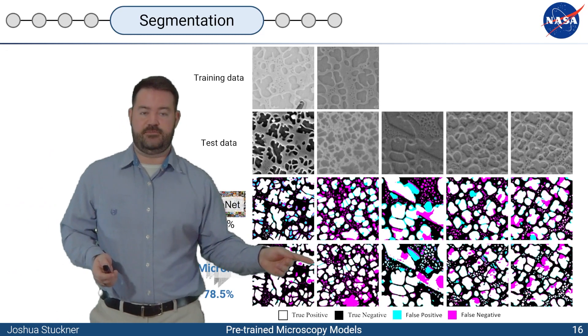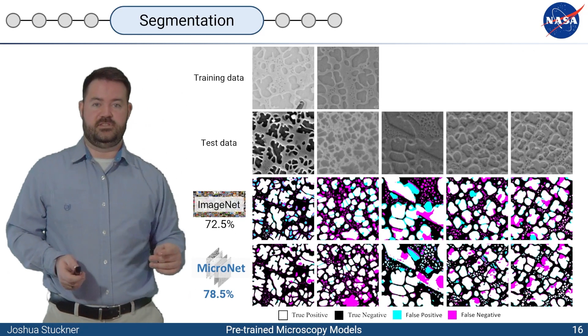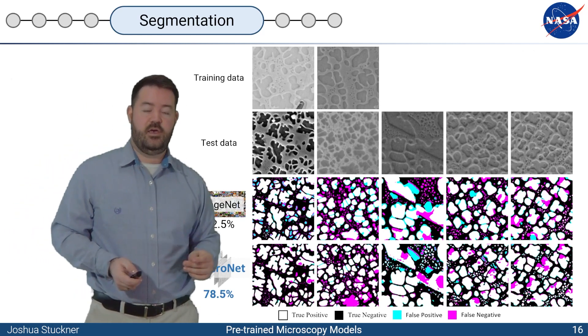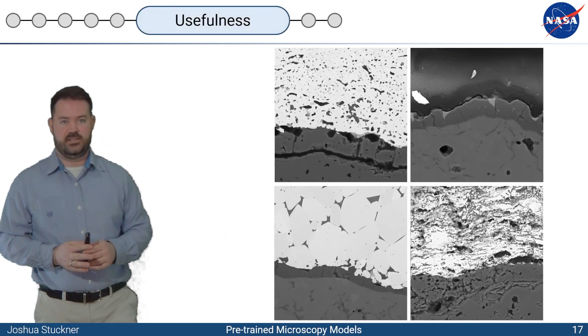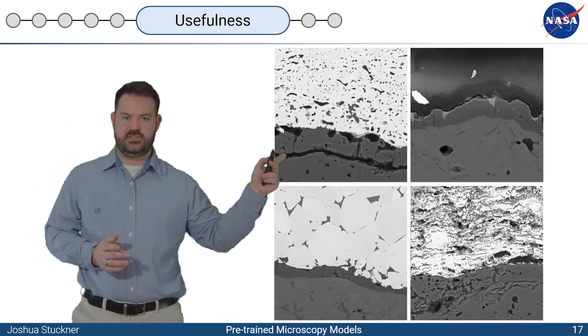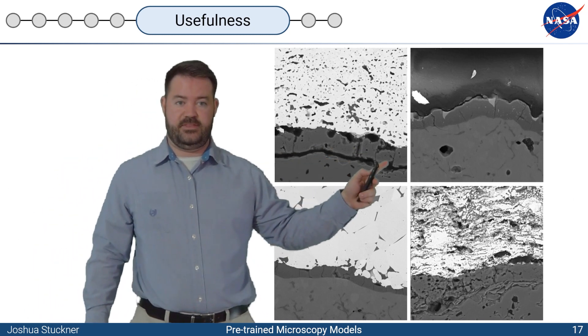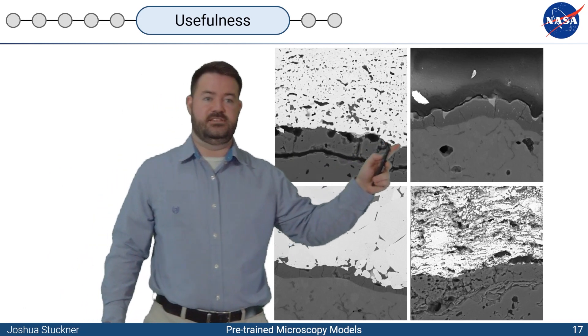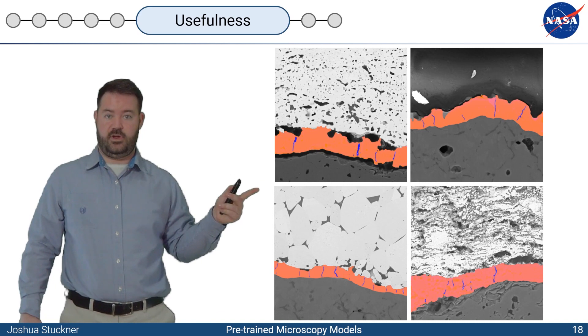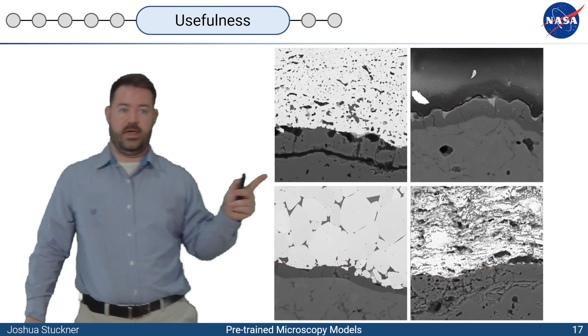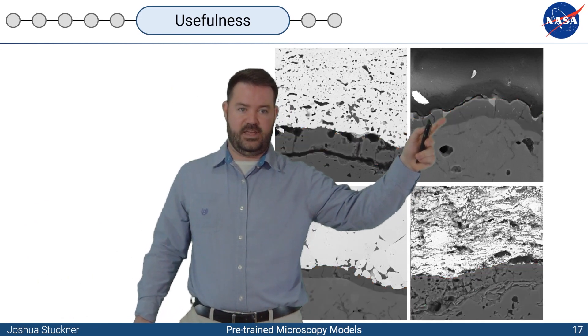In the worst case, you maybe have to sketch out another piece of training data. But often, I notice that it just works without me having to retrain the model with new training data. So for example, these are several different environmental barrier coatings. And they look quite different. So what we want to do is segment this oxide layer, but we're also going to segment the cracks in this case. These are all very different types of images. But the segmentation is incredibly accurate when we're pre-trained on Micronet.